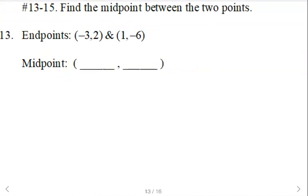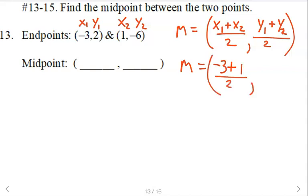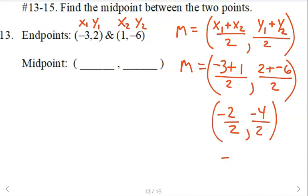For the midpoint between two points, you can use the midpoint formula — average your x's, average your y's. Label your points x₁, y₁, x₂, y₂. We'll have x₁ negative 3 plus x₂ which is 1, then y₁ plus y₂ which is negative 6. Adding those: negative 2 over 2, and 2 plus negative 6 is negative 4 over 2. Dividing, we get negative 1, negative 2. So that's the midpoint.